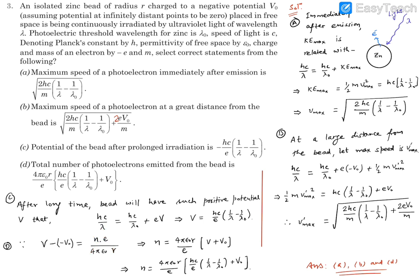This tells us N is the number of total electrons that must have gone out from this bead. These are the total number of photoelectrons. From here, N equals 4 pi epsilon naught R/E times (V plus V naught). This V is the ultimate potential we calculated in option C, which is HC/E(1/lambda minus 1/lambda naught). We can substitute that value. Hence we get the total number of photoelectrons emitted by this zinc bead. If you look at this expression, you will find the same expression we have got. Hence option D is also correct.